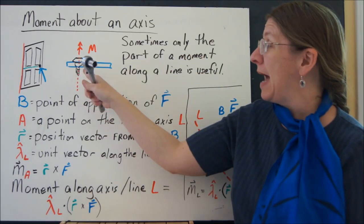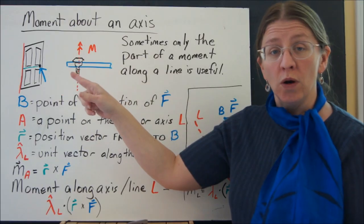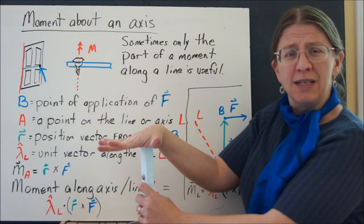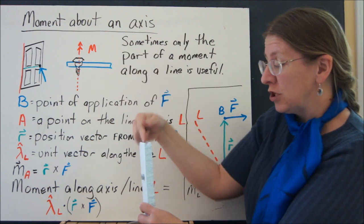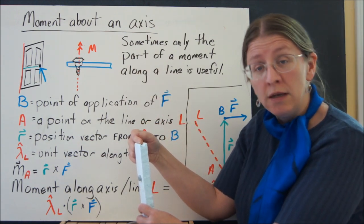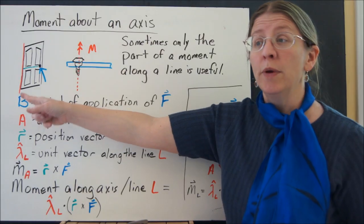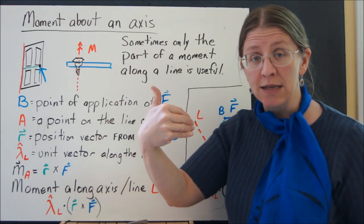Same thing with a door. If you push on the top of the door, it doesn't turn very well. You might be creating a moment if you're pushing mostly down and a little bit crooked. That still creates a little bit of a moment along the axis of a door, but the door only turns with the amount of moment that you're putting around the axis itself.